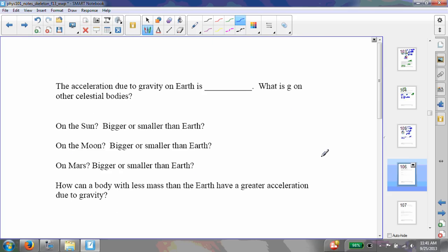Okay, so the acceleration due to gravity on Earth is 9.8, as we've already seen. What is the acceleration due to gravity on other celestial bodies? On the sun, the sun is a lot bigger than the Earth. The mass is a lot greater, so the acceleration due to gravity is greater on the sun. Of course, the radius is also bigger, but the mass is so much bigger that it counterbalances the larger radius. Remember, it's gm over r squared. Similarly, the moon is a lot smaller, the mass is smaller. On Mars, it has a smaller mass.